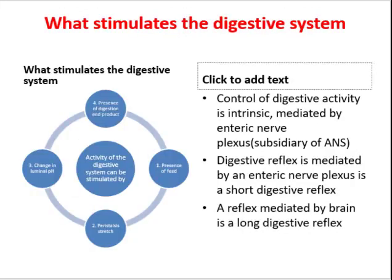What stimulates the digestive system? The activity of the digestive organ can be stimulated by many factors: by stretch, by the presence of undigested food or feed, by a change in luminal pH, and lastly, by the presence of digestive end products, as well as other things.